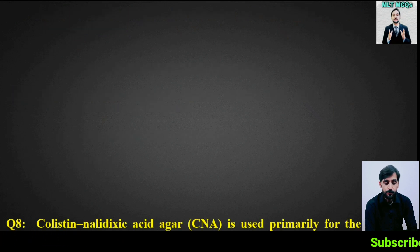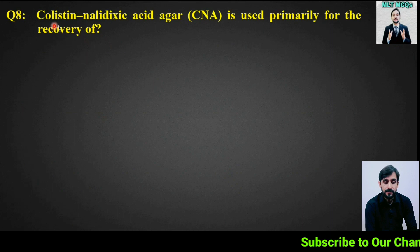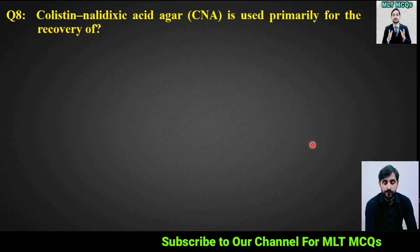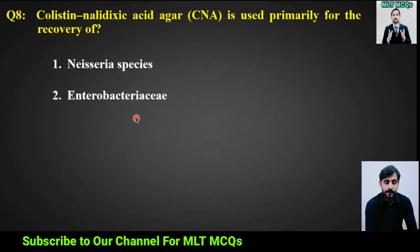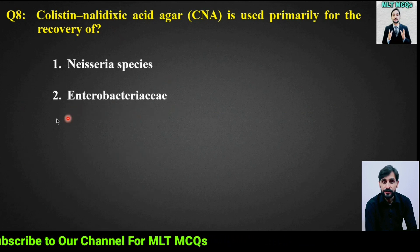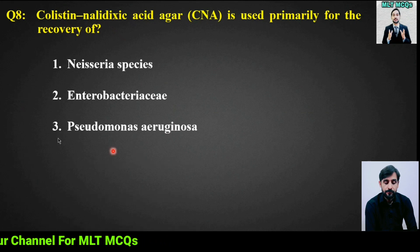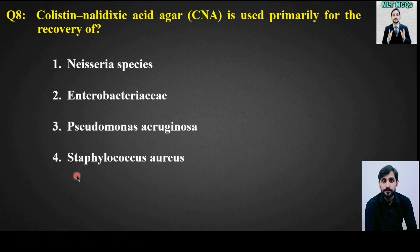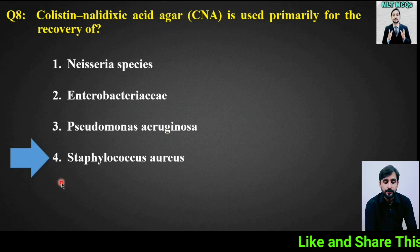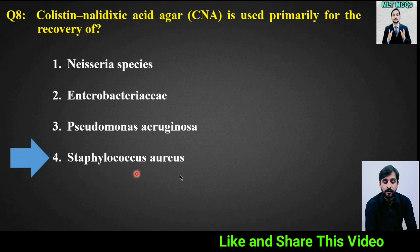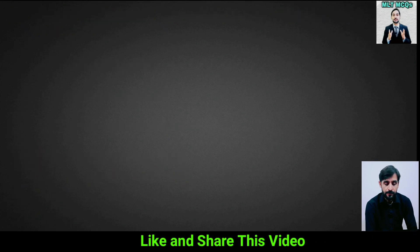MCQ number 8: Colistin nalidixic acid agar is used primarily for the recovery of — options are: Neisseria species, Enterobacteriaceae, Pseudomonas aeruginosa, or Staphylococcus aureus. The right answer is option 4: Staphylococcus aureus.